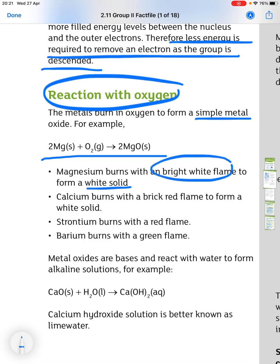And magnesium, as you know, burns with a bright white flame to form a white solid. Calcium burns with a brick red flame, also to form a white solid. Strontium is a red flame and barium is a green flame.